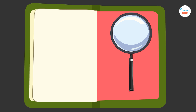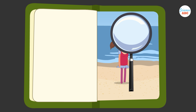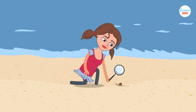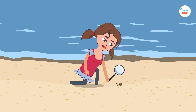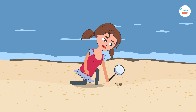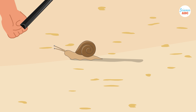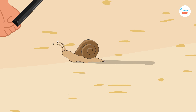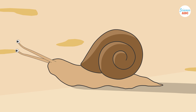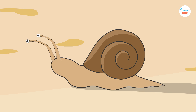Imagine that you have a unique magnifying lens that can zoom into the tiniest fraction of a millimeter. Now, picture a snail slowly moving along the beach. With the naked eye, you see the snail's movement as smooth and continuous. However, when you look through the magnifying lens, you can see what appears to be smooth motion is actually a combination of many small movements that are not smooth at all.